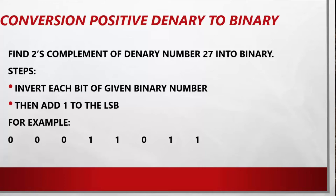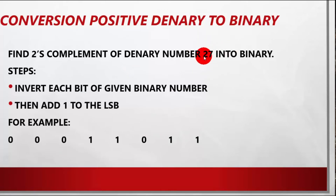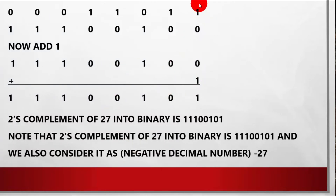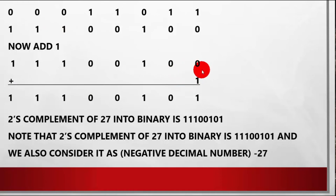The next topic is conversion of a positive decimal to binary. Let's say the decimal number is 27 and we have to convert it to binary — keep in mind this is a positive number. First convert 27 to its binary number. Then invert all ones to 0 and all zeros to 1. Finally, add 1 — that is the last step. The result is the 2's complement of 27, which is 11100101 in binary.